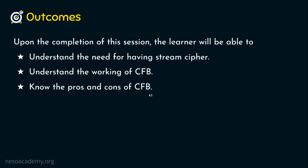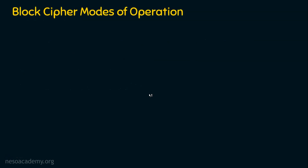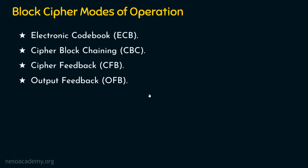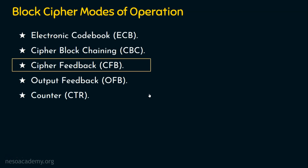We know basically there are five block cipher modes of operation: number one, the electronic code book; number two, the cipher block chaining; number three, the cipher feedback mode; number four, the output feedback mode; and number five, the counter mode. We are now on this topic — the cipher feedback mode.